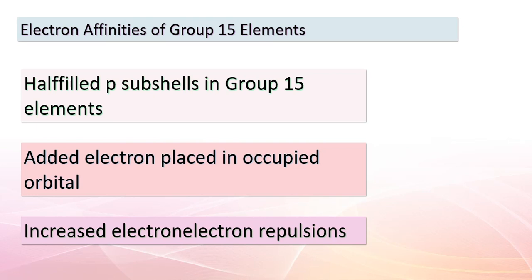Let's delve into the intriguing world of electron affinities within the group 15 elements. These elements possess unique characteristics due to their half-filled p subshells. When an additional electron is introduced, it must be placed in an orbital that's already occupied, resulting in larger electron-electron repulsions. Notably, some elements like nitrogen (N) have positive electron affinities, while others such as phosphorus (P), arsenic (As), and antimony (Sb) exhibit less negative electron affinities compared to their neighbors to the left. This trend mirrors what we explored about first ionization energy, and arises from unique electron arrangements within these elements' atomic structures.